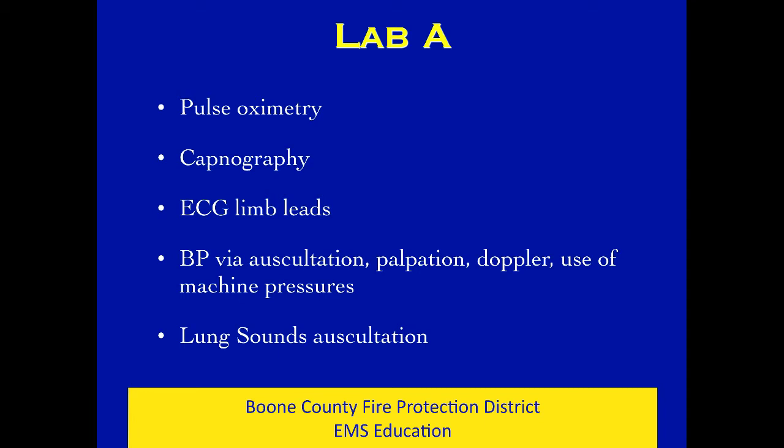During Lab A, we want you to learn in depth about pulse oximetry - what shows an accurate reading, how you'd know if it was accurate, and what things can fool it like carbon monoxide and nail polish. We want to work on capnography so you understand the number as well as the waveform, how to use the sensors, when sensors can give you bad data, and cause you to make bad decisions.